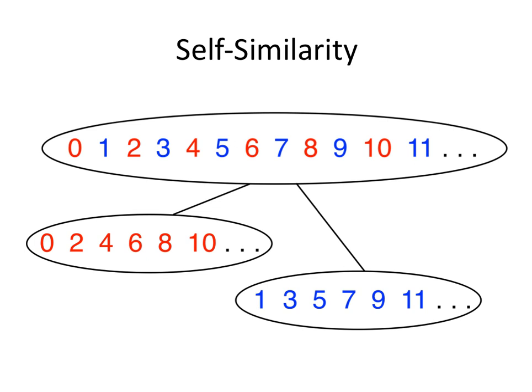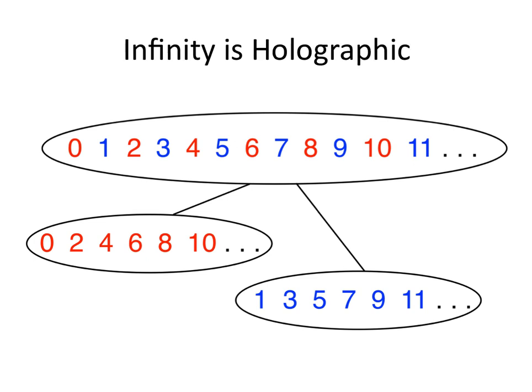The even numbers represent the whole because you can define the successor of an even number as the next even number. The odd numbers represent the whole — the successor of any odd number is the next odd number. Either one of those parts can completely stand in for the numbers; you can do arithmetic on either of the sub-parts as if it were the whole, just by simple translation. And so the infinity of the number line is holographic.